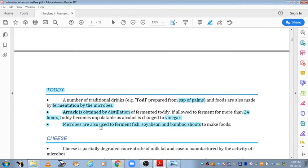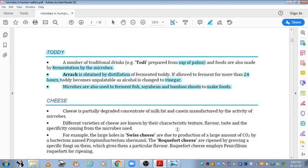Microbes are also used for the fermentation of fish, soya bean and bamboo shoots to make food. We are talking about the newly growing bamboo shoots which are soft. These are also fermented to make different food types.